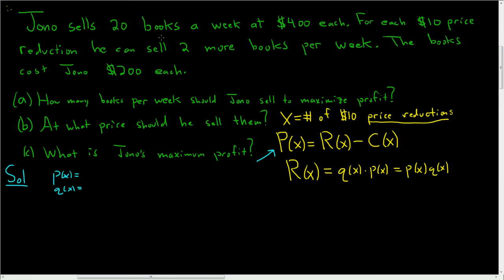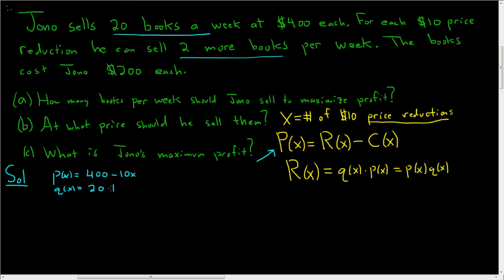So let's read it carefully. Jono sells 20 books a week at $400 each, so the price is $400. For each $10 price reduction, he can sell two more books per week. The price function is $400 minus 10 times the number of price reductions. So if he reduces the price once, it would be $400 minus 10; twice, it would be $400 minus 20, etc. The quantity is 20 plus two more books per price reduction, so 20 plus 2X.